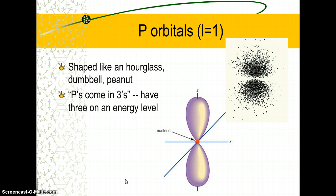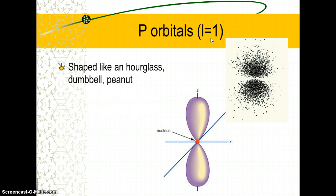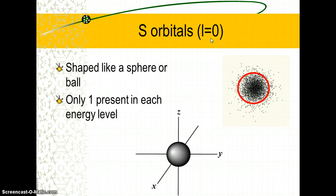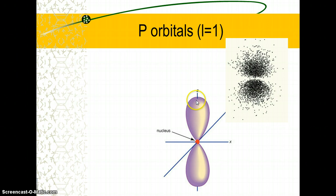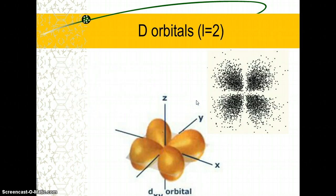For the angular momentum quantum number, you can say either s or p, but there are numbers associated with this. They relate to the number of nodes. A node is a wave term — a point where the electron just wasn't. P-orbitals have one node, so the number would be one. S-orbitals have zero nodes — it was a solid region with no areas where the electron wasn't found — so their number is zero.